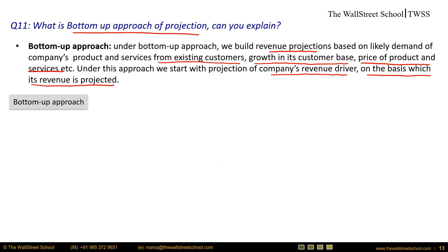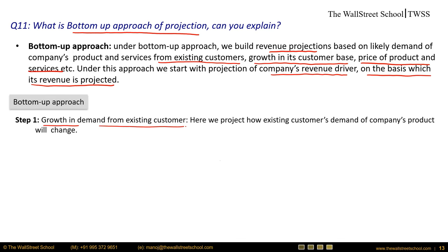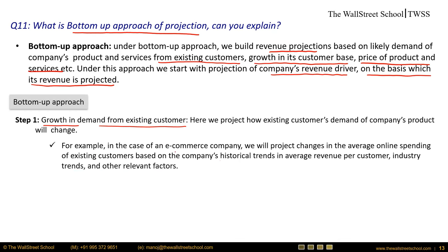Step one: growth in demand from existing customers. In this step we estimate the expansion in demand from existing customers — how demand for the company's products will increase in the future. For example, for an e-commerce company, we look at how revenue from existing customers will increase based on average online spending. We use the company's historical trend in average revenue per customer, industry trends, and other relevant factors.